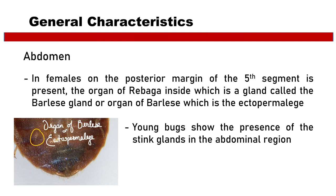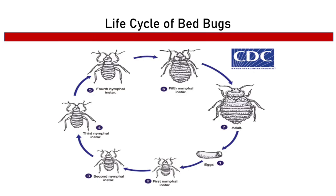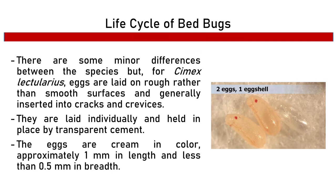Life cycle of Cimex lectularius, also known as the bed bug: eggs are laid on rough rather than smooth surfaces and are generally inserted into cracks and crevices. They are laid individually and held in place by transparent cement. The eggs are cream in color, approximately one millimeter in length and less than 0.5 millimeter in breadth.